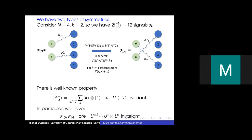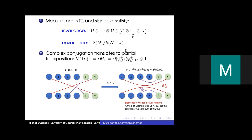If we pick any two signals we can move from one to another by applying a permutation from S_n/S_{n-k}. In the case of standard PBT where k=1 we end up with a transposition. There is also a different symmetry: maximally entangled states are U⊗U* invariant, so our σ's are U⊗U⊗U*⊗U*⊗U* invariant. In general, our measurements and signals are invariant with respect to a skew action of the unitary group and covariant with respect to permutations.